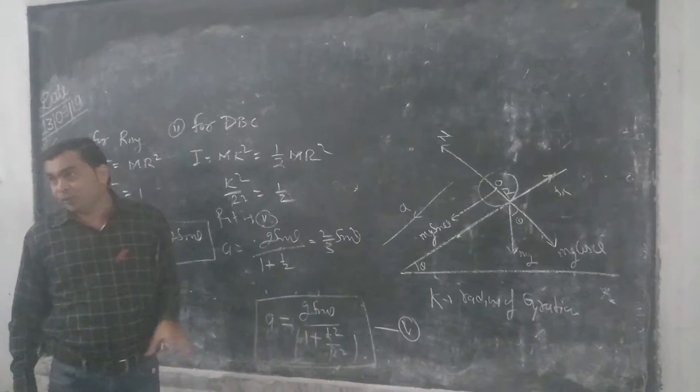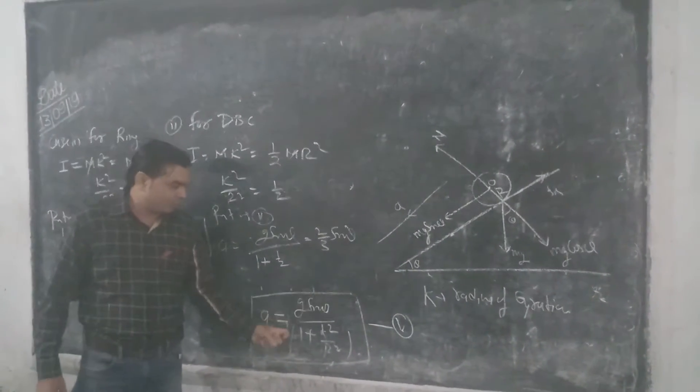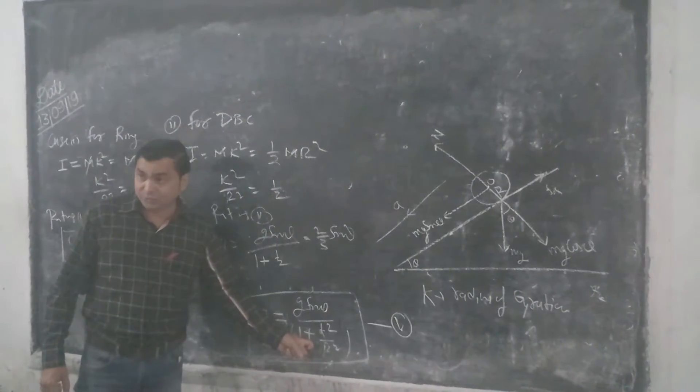which is on an inclined plane, the general formula is A equal to g sine theta divided by 1 plus k square upon r square.